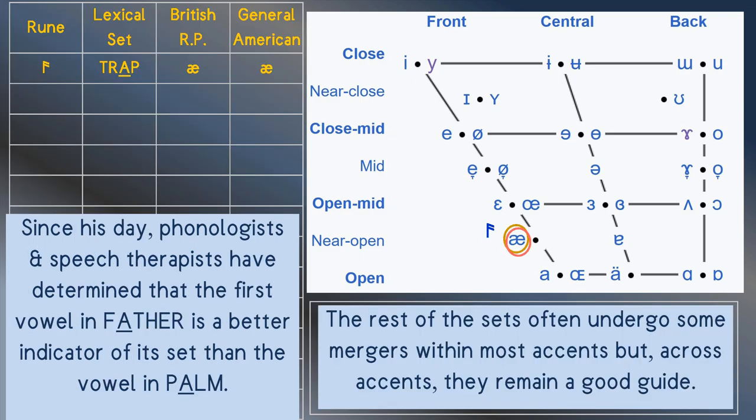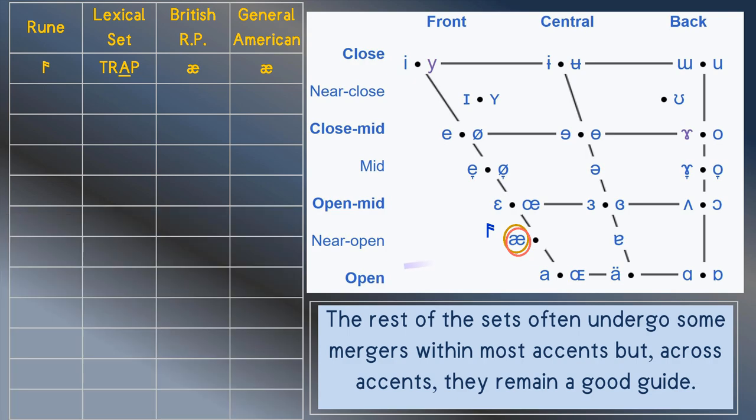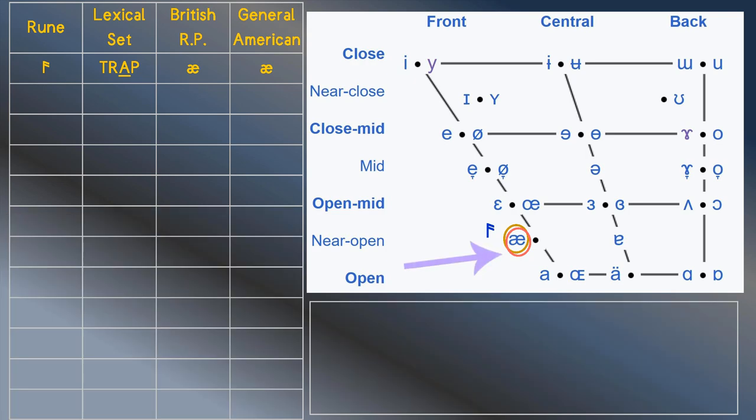First up, let's start with the trap vowel. Both accents agree on its sound and there's already a rune for that sound, so lock in ash for the trap vowel. Next out of the bag is the goose vowel. The two accents disagree on its length but otherwise recognize the same sound and there's already a rune for it. Lock in ur for the goose vowel.